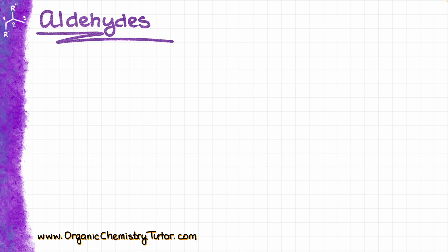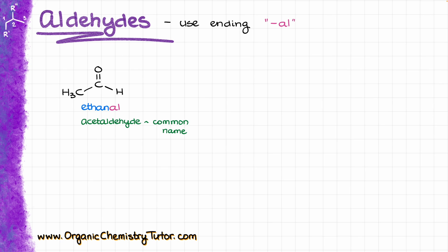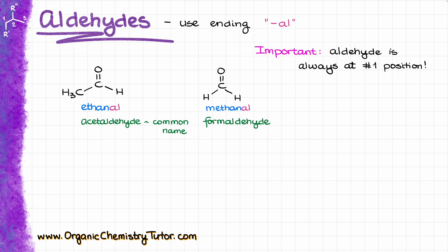Now, when it comes to the aldehydes, the ending that we are going to be using for those is going to be -al. So, a 2-carbon aldehyde would be ethanal. It is also known as acetaldehyde by its common name. Another common name you might want to remember is formaldehyde, which is the simplest aldehyde. The IUPAC name for it is going to be methanal, but hardly anyone ever calls it this way. And just like with ketones, we'll have to number our molecule to give the lowest possible numbers to the carbonyl of the aldehyde.